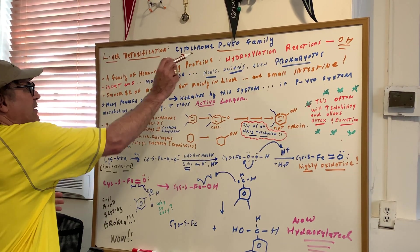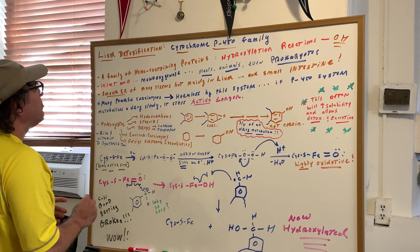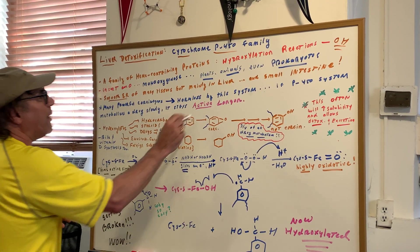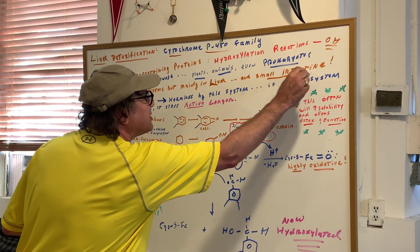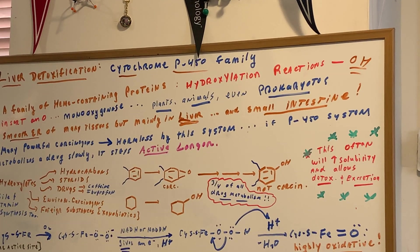These cytochrome P450 family of proteins are found on the smooth ER or in the smooth ER of many tissues, but mainly in the liver and the small intestine. That would be a really good question. Liver and small intestine is where we contain these.